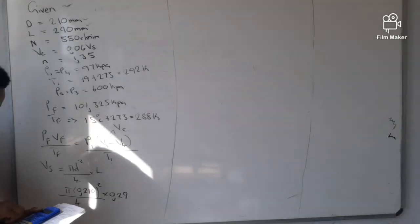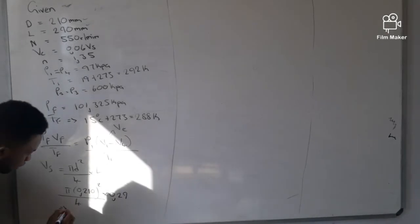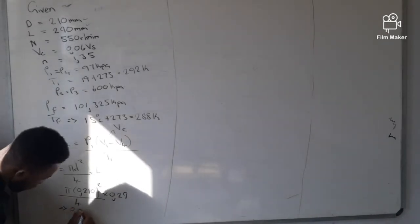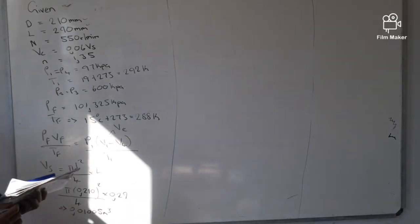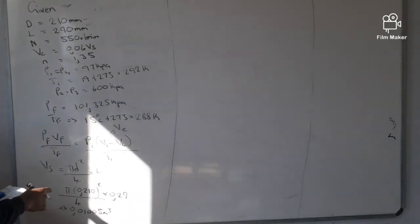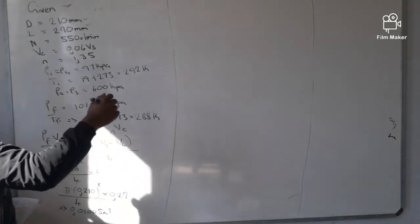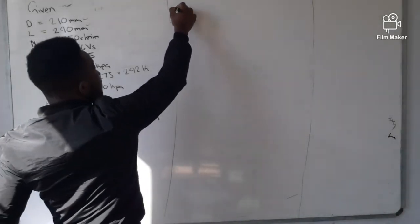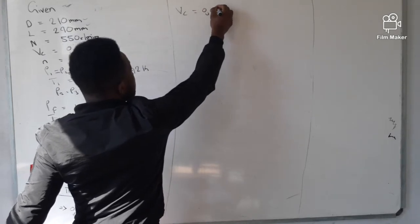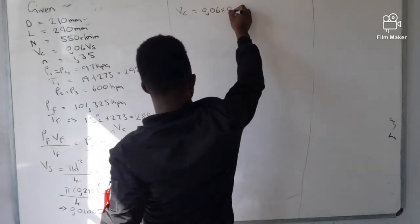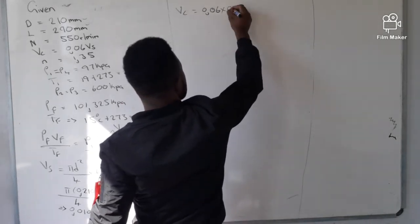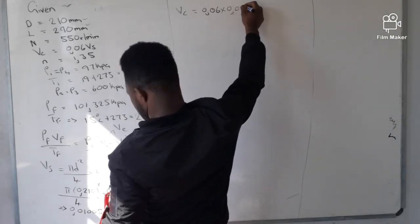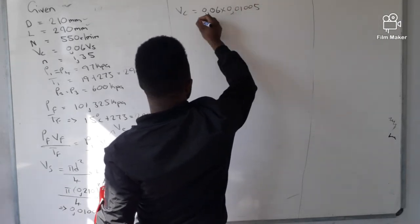Punching the numbers into the calculator gives Vs = 0.01005 cubic meters. Now since we have Vs, we can calculate the clearance volume: Vc = 0.06 × Vs = 0.06 × 0.01005.